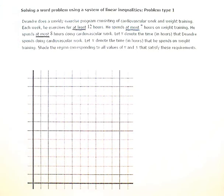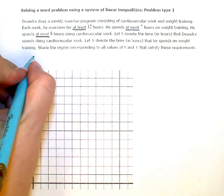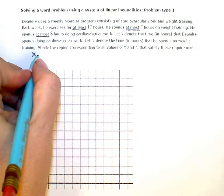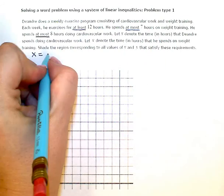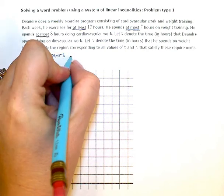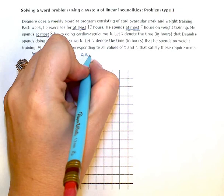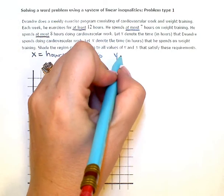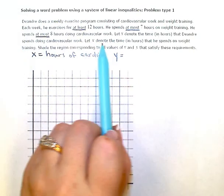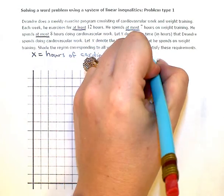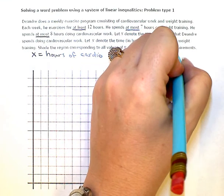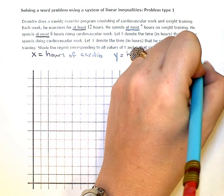Okay, so I have a pretty complicated situation here. I have lots of constraints, or things that I need to take into account. But first, I'm just going to put a reminder to myself here. X represents the hours spent on cardiovascular work, so hours of cardio. And Y represents the hours spent weight training. So Y is hours of weight training.